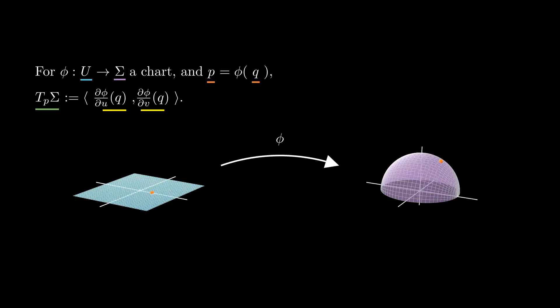Given a surface sigma, a parameterization phi, and p equals phi of q in the image of phi, we can define the tangent plane to sigma at p, denoted by Tp sigma, to be the two-dimensional plane spanned by the vectors partial phi with respect to u and partial phi with respect to v at q.